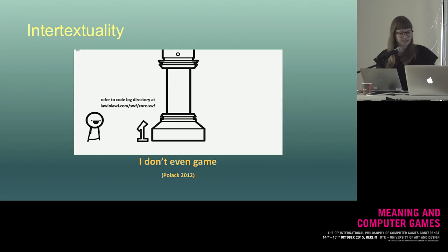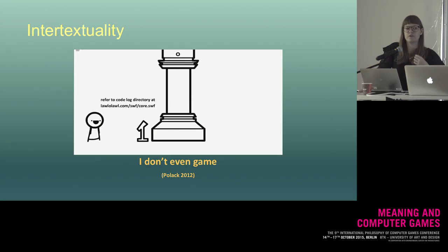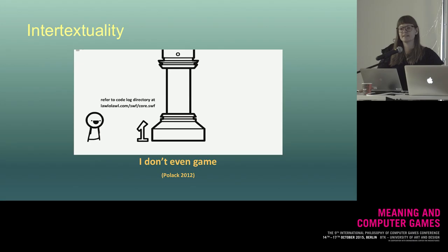The third strategy is intertextuality — used here as a stylistic device where a work of art refers to another work of art within itself. Intertextual references are very significant in 'Frog Fractions,' where the game is one big parody of other games, but that intertextuality doesn't affect our ability to play. However, in 'I Don't Even Game,' intertextual devices are used in a way that makes it impossible for the player to progress if she does not know the references, or if she refuses to leave the game to find out.